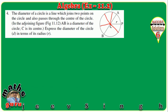AC is a radius and its length is r. BC is also a radius and its length is r. So now you have 2r. And AB is the diameter, so D equals 2r. That is the answer.